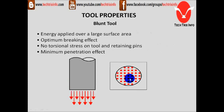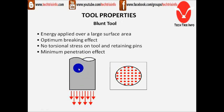Next is the blunt tool. Energy is applied over a large surface area for an optimum breaking effect, with no torsional stress on the tool and retaining pins. There is minimum penetration effect because the area of contact is high. This is how the end of the tool looks, and this is normally used for heavy breaking applications — big rocks, etc.